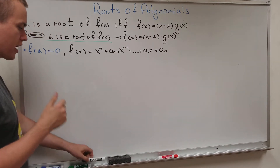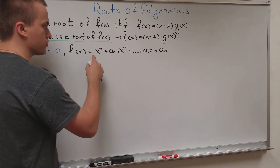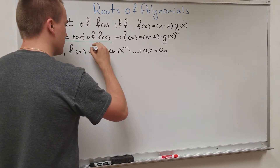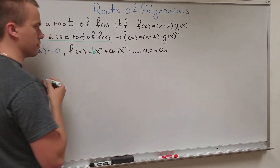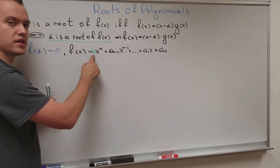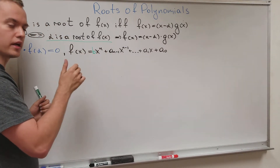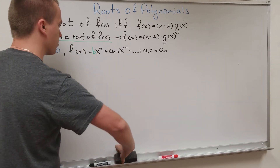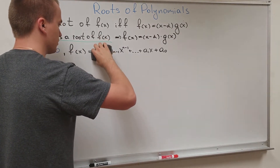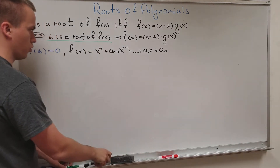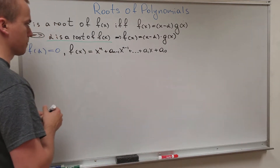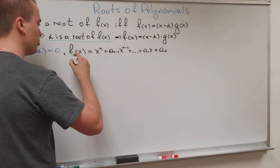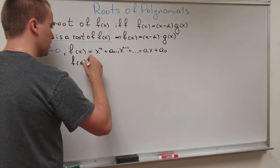One small comment: you might ask why there is no leading coefficient. I could write some leading coefficient b, but if b is nonzero I can divide both sides by b and get my polynomial without a leading coefficient. So let's not worry about the leading coefficient. I have this polynomial, and I know that f(alpha) equals zero.